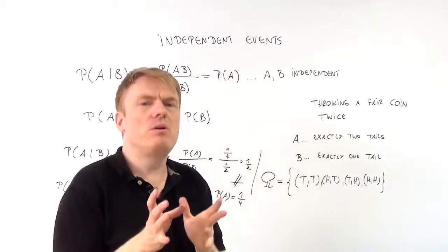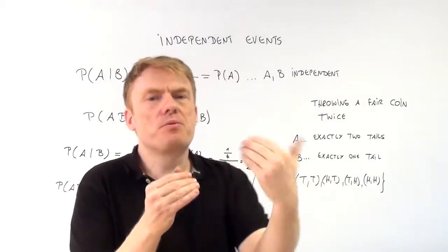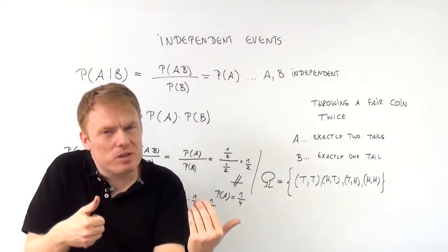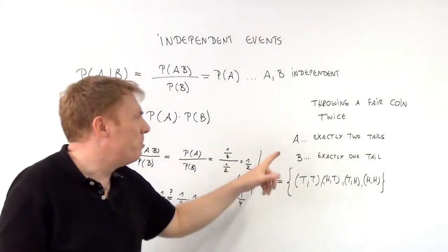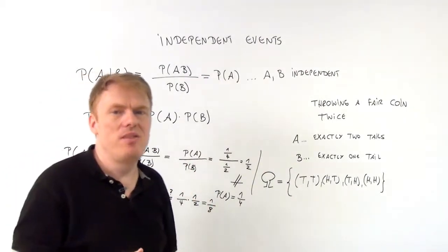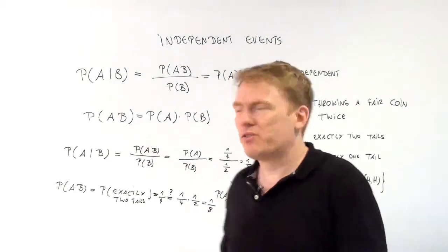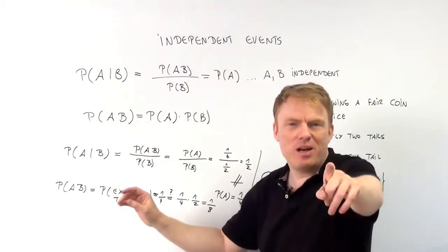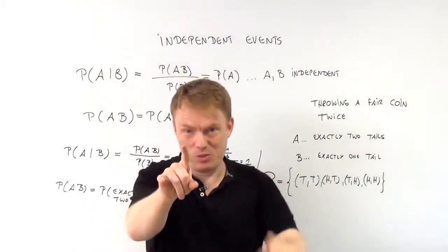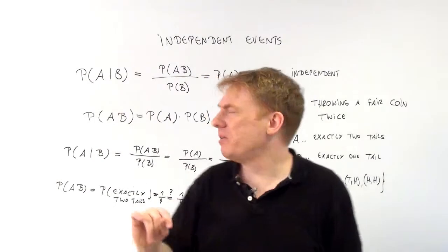Now, the second trial of throwing the coin is of course independent from what occurred the first time. But are these two events — defined over outcomes — dependent or independent? Think about it. What would you say? Let's look at it.